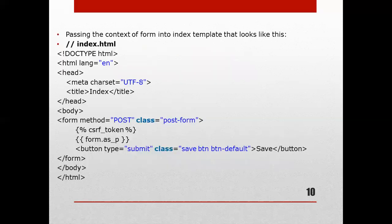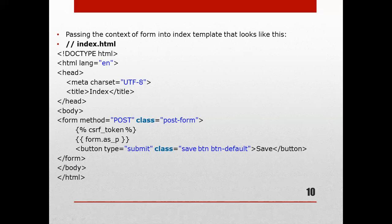We pass the context of the form into the index template. The index.html file looks like: DOCTYPE html, html lang='en', head with a title tag, then in the body a form tag with method='post' and class='post-form', a button with type='submit' and class='save' labeled 'Save', followed by closing form, body, and html tags.